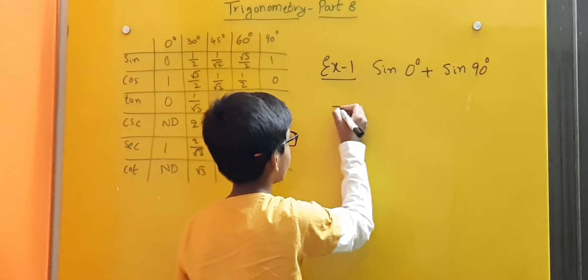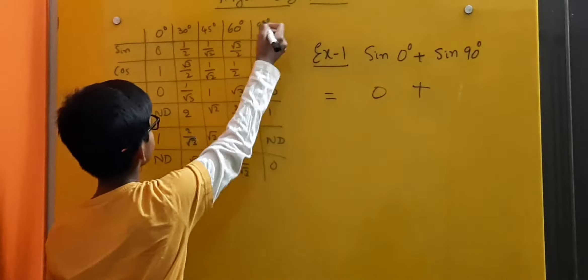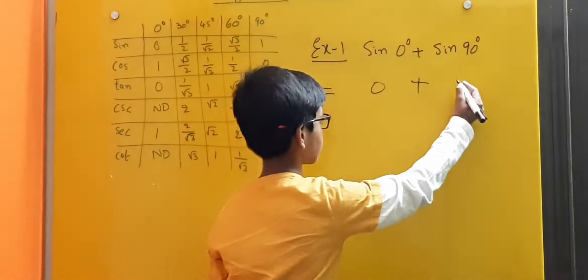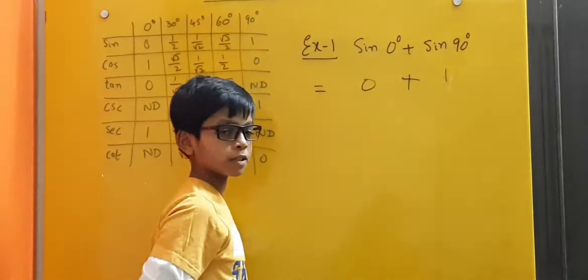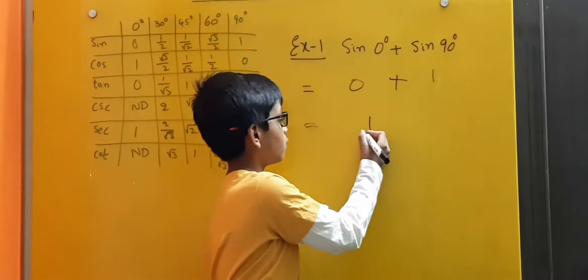So we substitute the value 0 plus, here sin 90 degrees is equal to 1. So we substitute the value 0 plus 1 is equal to 0 plus 1 is 1. And this is the answer.